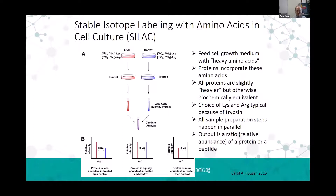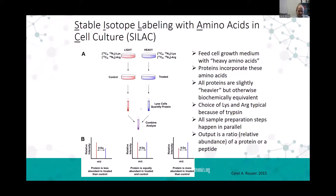We can use this property to label cells with isotopically labeled lysine or arginine, because once we digest these with trypsin, we'll have at least one lysine or arginine at the end of any given peptide. Assuming that the organism doesn't have metabolic shunting pathways to convert lysine and arginine into other amino acids, we can label in vivo organisms or cells with isotopically light or heavy lysine and arginine, then mix these samples together. In an MS1 scan, we can then measure the relative abundance of these peptides in a very direct manner.